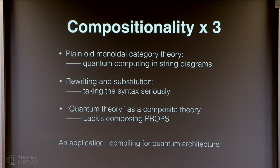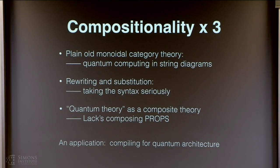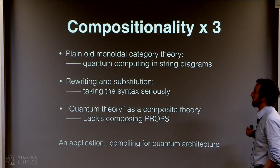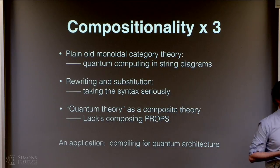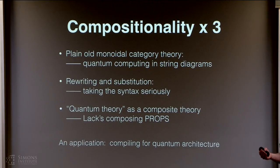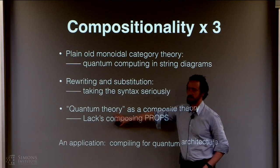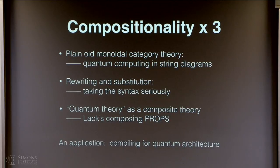So the first thing is plain old monoidal category theory, which is just trying to do quantum computing in a string diagrammatic framework and taking advantage of that notion of compositionality. Second idea of compositionality is in the equational theory of this stuff, taking the idea of the diagrams as syntax seriously. And finally, the idea that this equational theory itself can be thought of as a composite of other theories. And at the end, I will hopefully show that this has got something to do with real quantum computers.